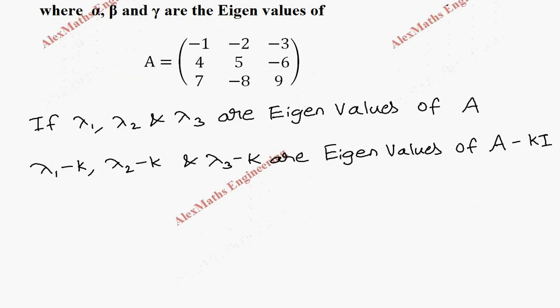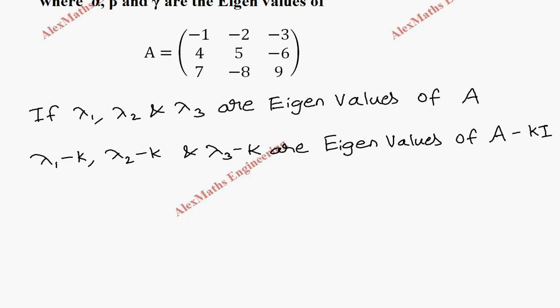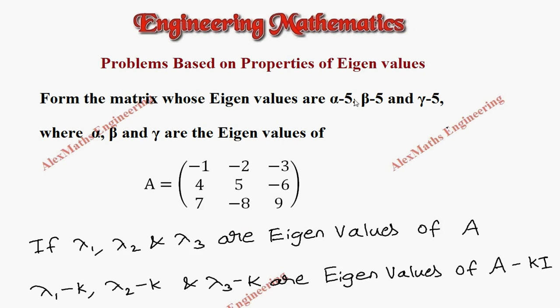Now we are going to form the matrix whose eigenvalues are alpha minus 5, beta minus 5, and gamma minus 5.